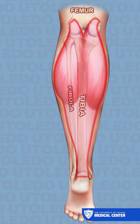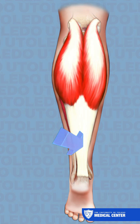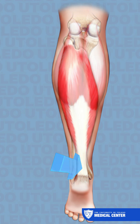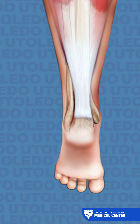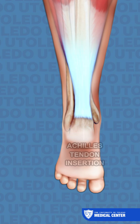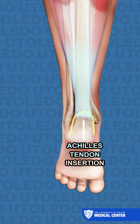The two bellies of the gastrocnemius muscle end in a tendon, which joins the tendon of the soleus muscle to form together the tendocalcaneus, or Achilles tendon, which inserts into the middle third of the posterior surface of the calcaneus.